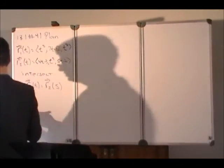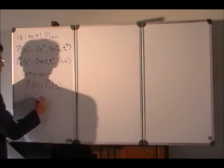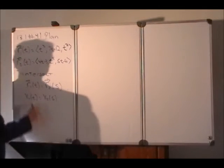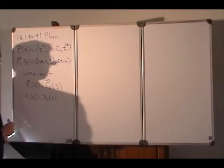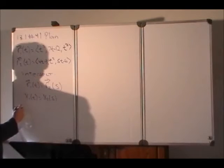In other words, we might set x1 of t equal to x2 of s, because that's what the first component of this vector equation means. This vector equation really has three scalar equations within it, and this is the first one.